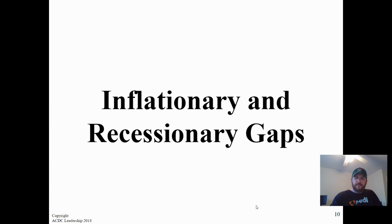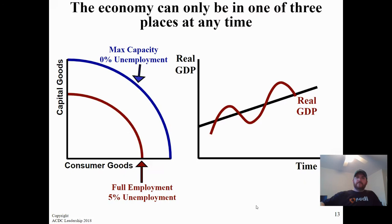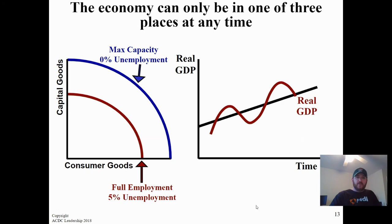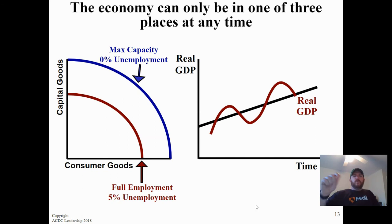Now let's talk about gaps. The economy can only be in one place at any given time, and there are three possible options: long-run macroeconomic equilibrium — producing at potential; a recessionary gap — with high unemployment and lower price level, which I call symptoms of a recession; or an inflationary gap — where we have inflation and are over-employed, with resource prices heating up.